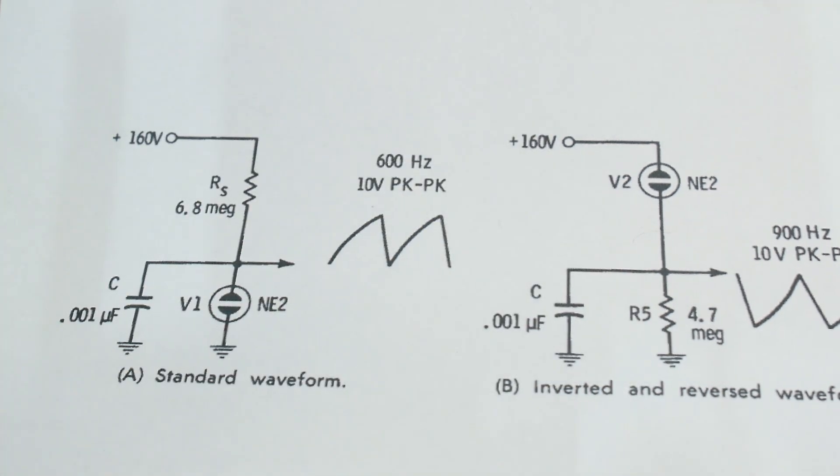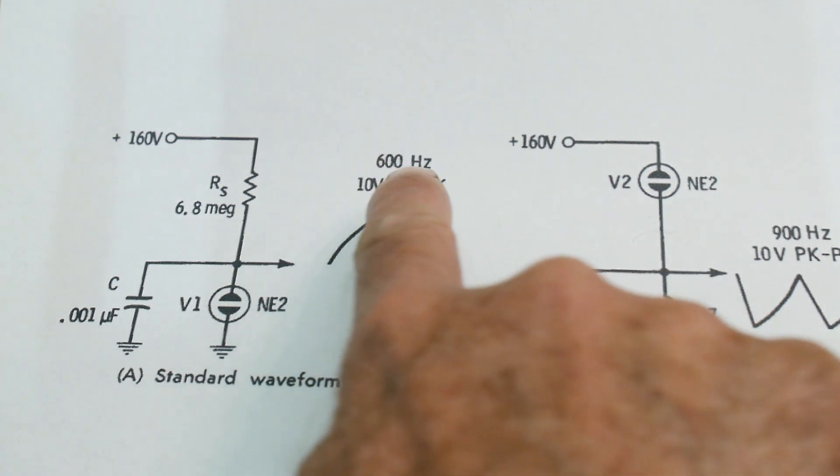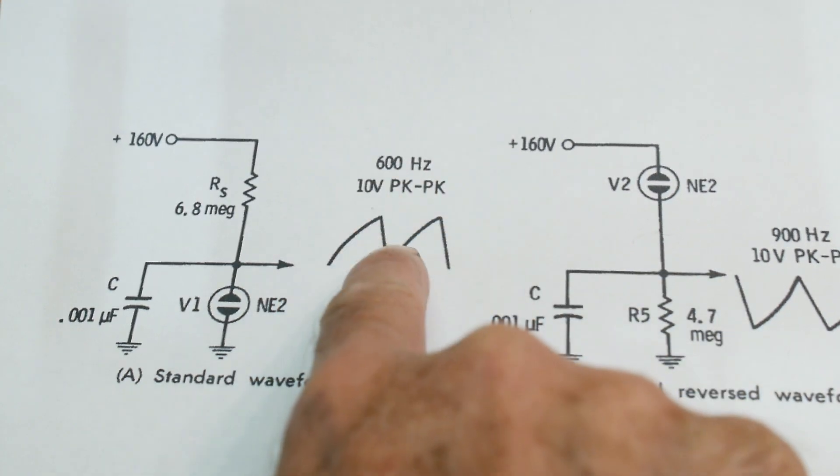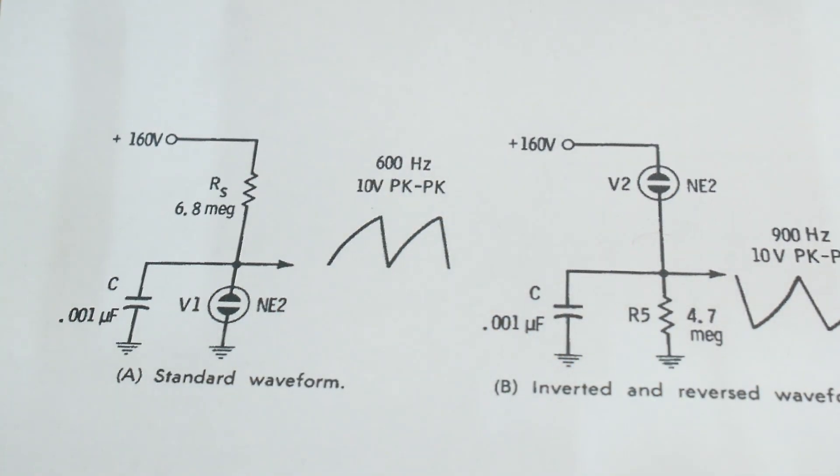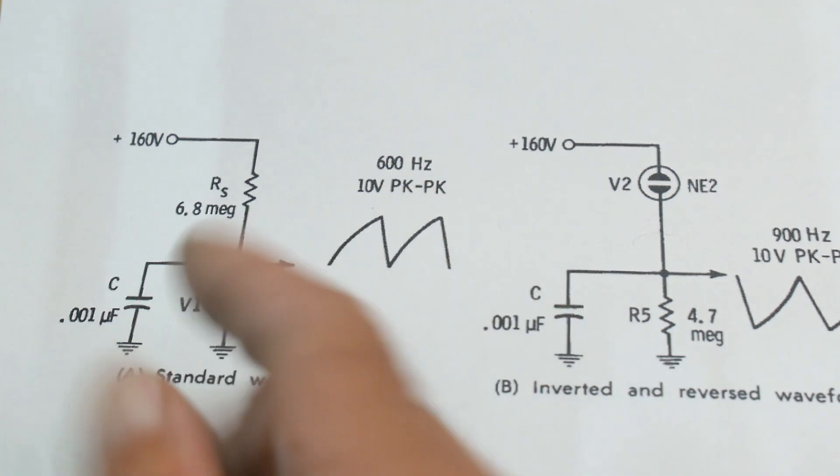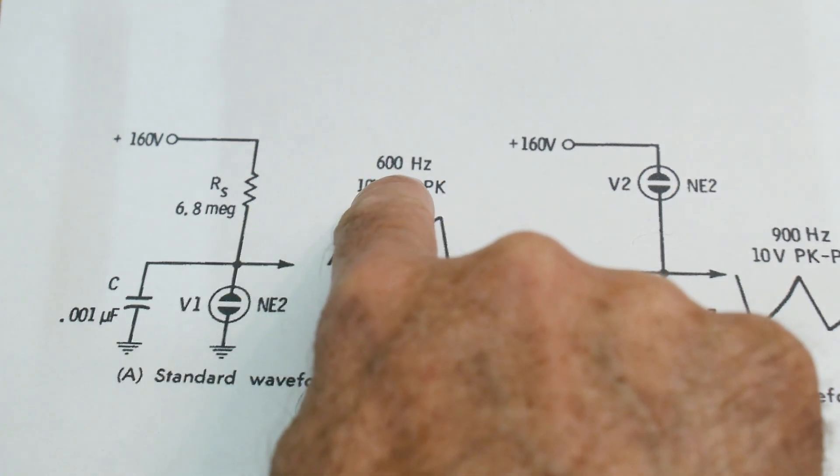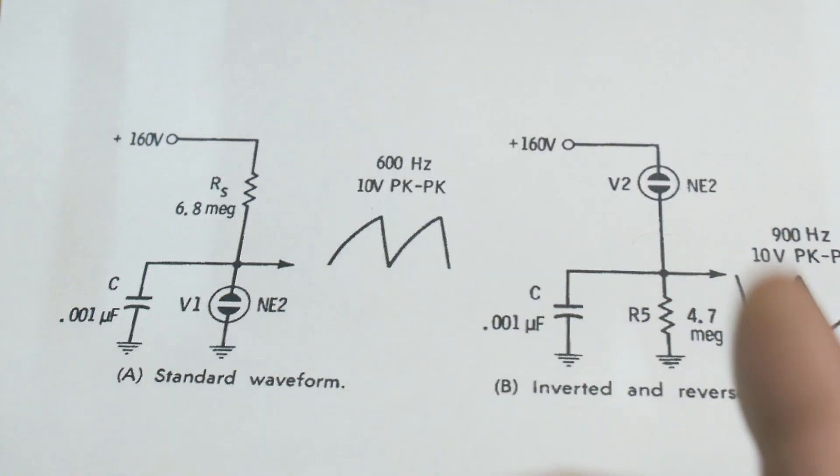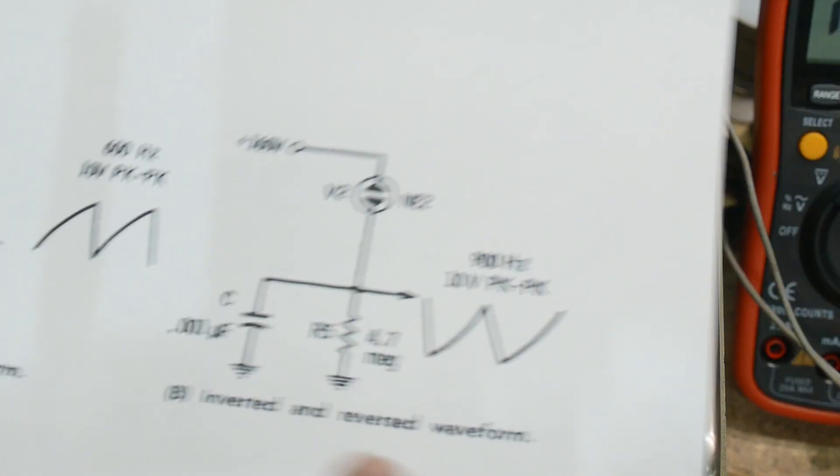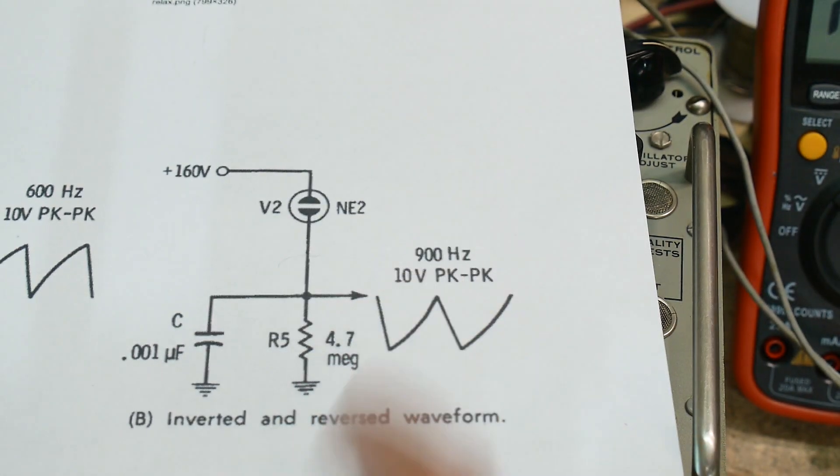And I wired it up, and it didn't do anything. I thought, oh, it's supposed to oscillate, it's supposed to flash. And it didn't do anything. And I was all bummed out. Then I noticed that it actually flickers at 600 hertz. What good would that do? Why would you want to have something flicker at 600 hertz? Makes no sense to me. And here's a different way to do it. This one oscillates at 900 hertz. Why do you want to do that? I don't understand.